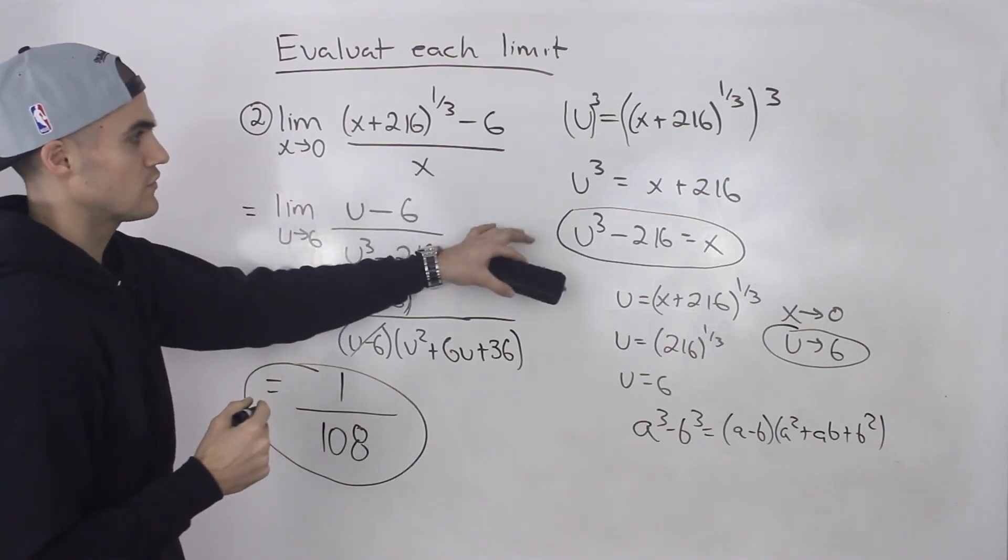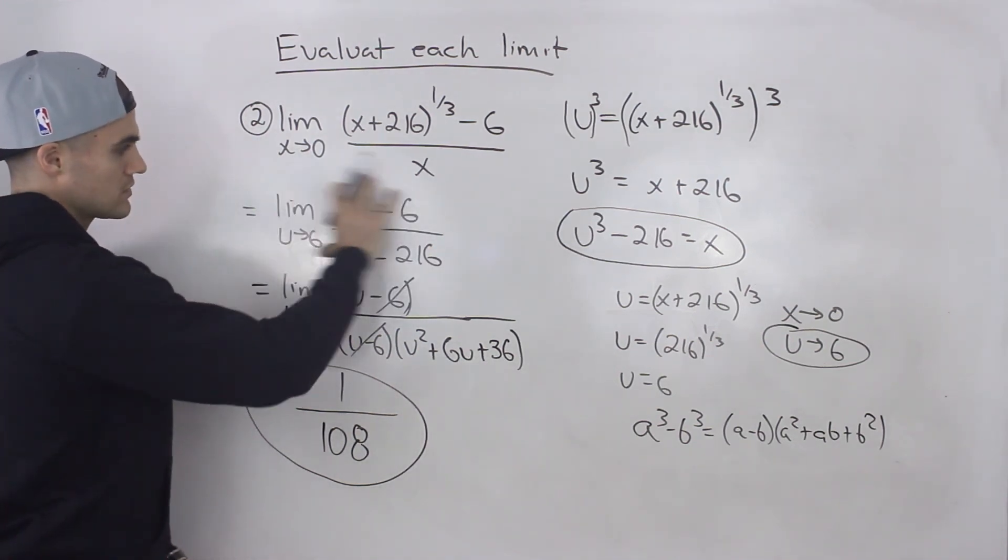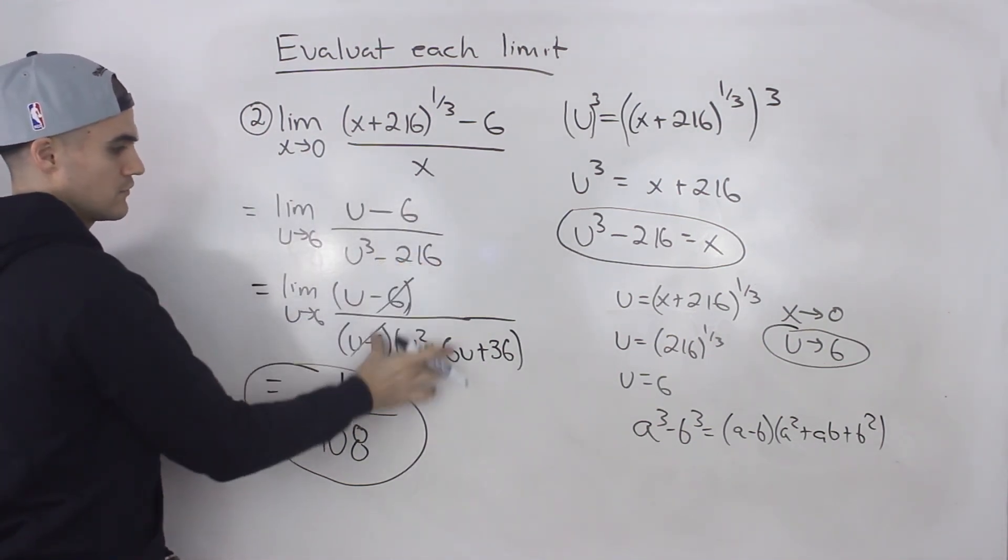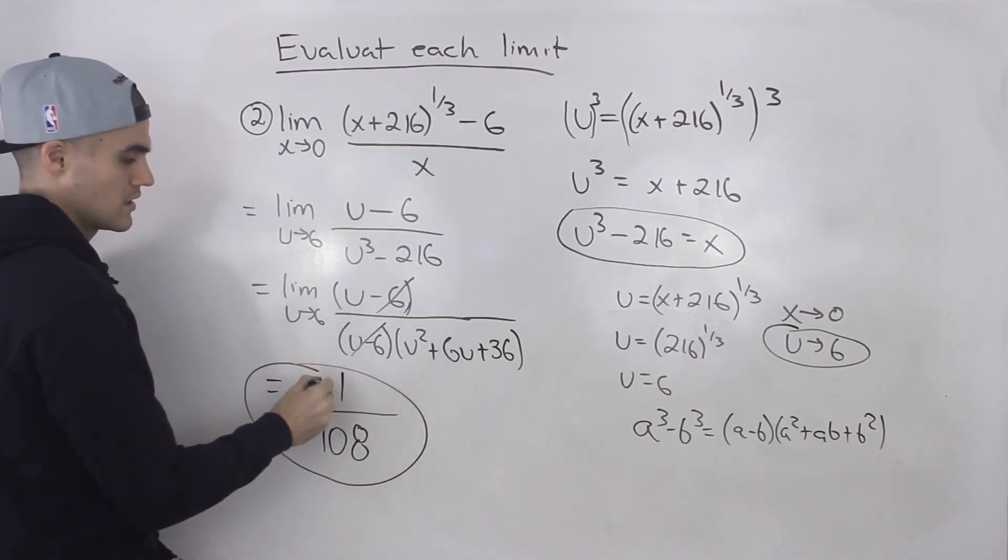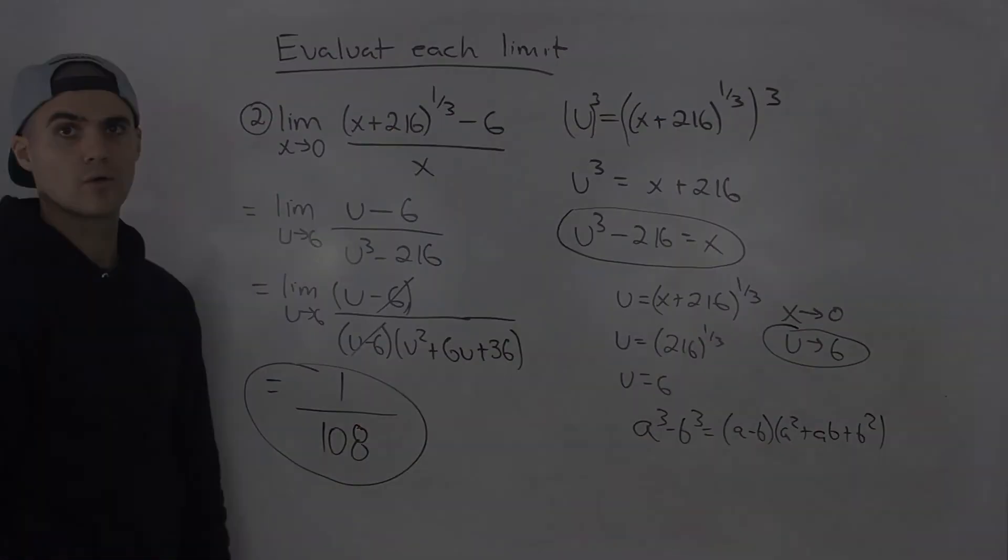So you've got to do a change of variable, change everything to be in terms of u, you've got a difference of cubes, u minus sixes cancel out, then plug in a u value of six, you get one over 108.